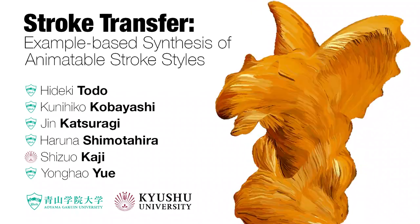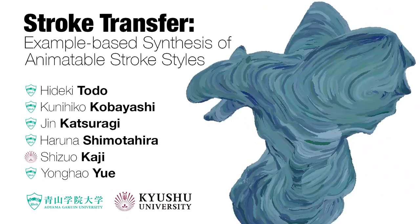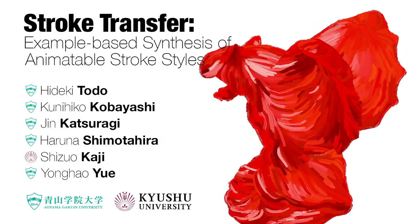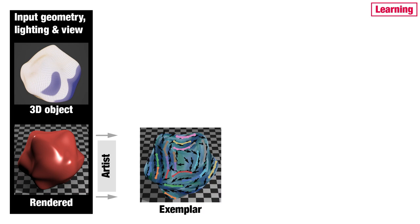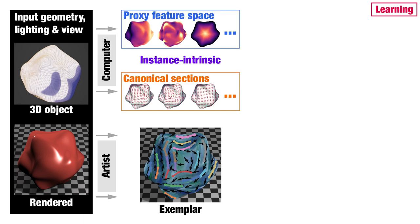We present Stroke Transfer, a method for example-based synthesis of animatable stroke styles. Given a 3D object, we ask an artist to draw an example on the rendered image with brush strokes together with annotations for the stroke's orientation, length, and width. At the same time, the system computes features and canonical sections based on the geometry, lighting, and viewing conditions at each point on the surface of the 3D object. They are independent from the style of the strokes, but encode the instance intrinsic information.